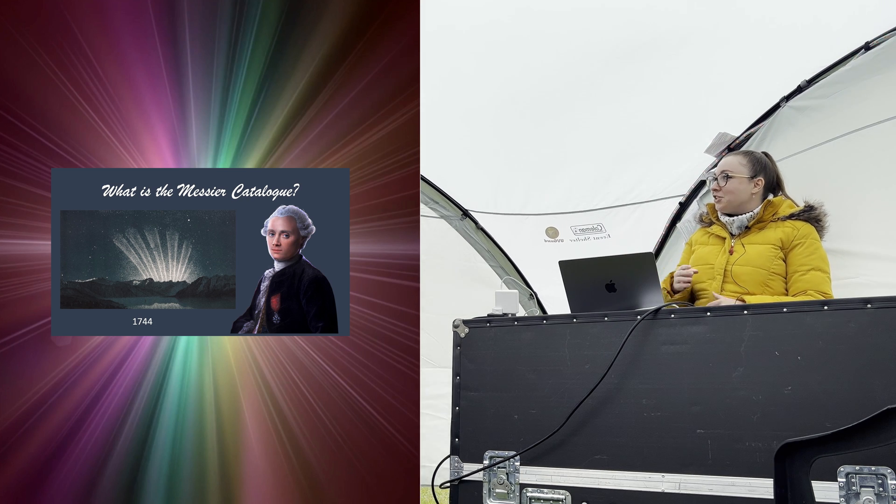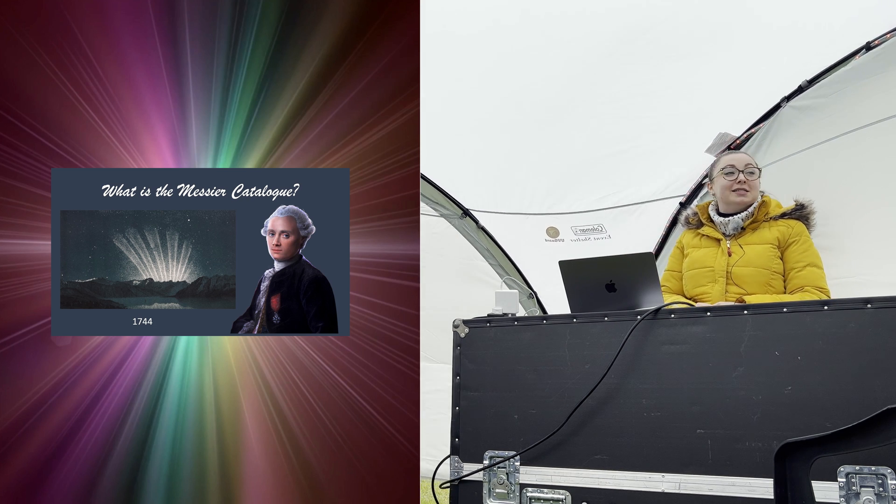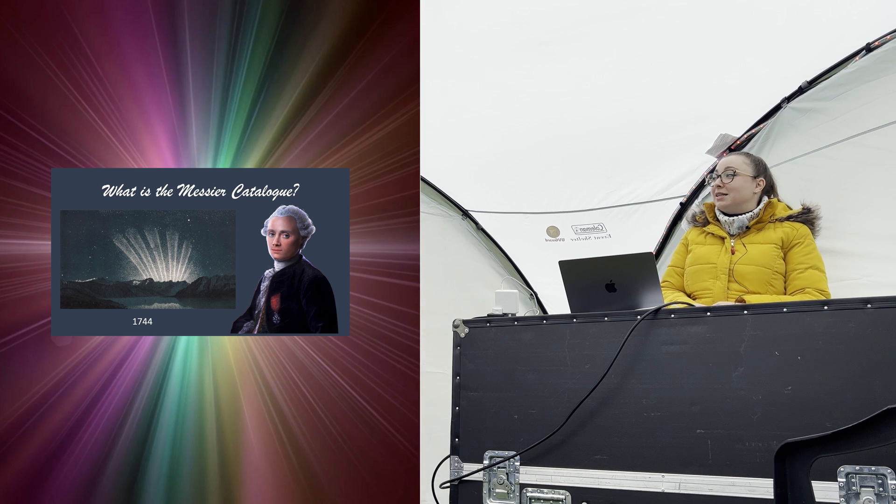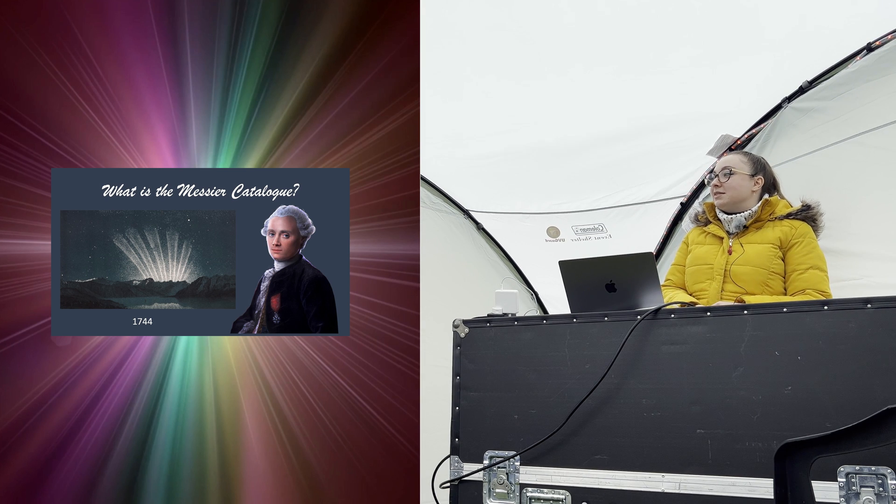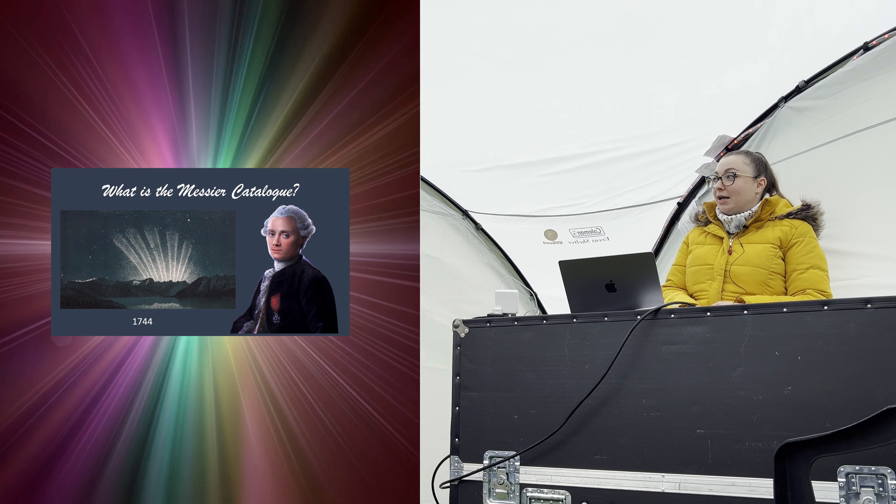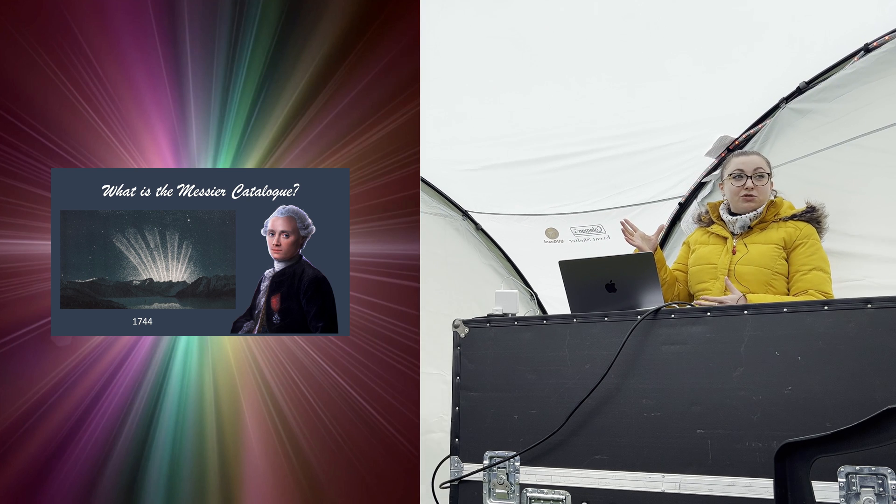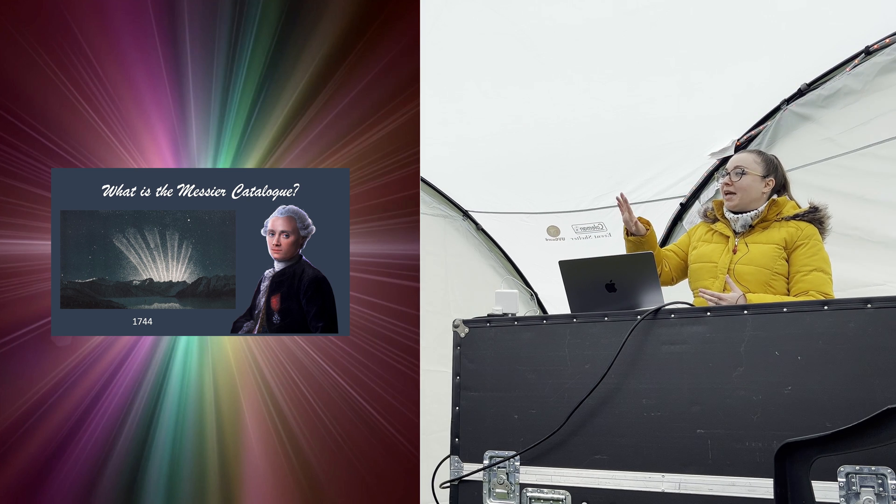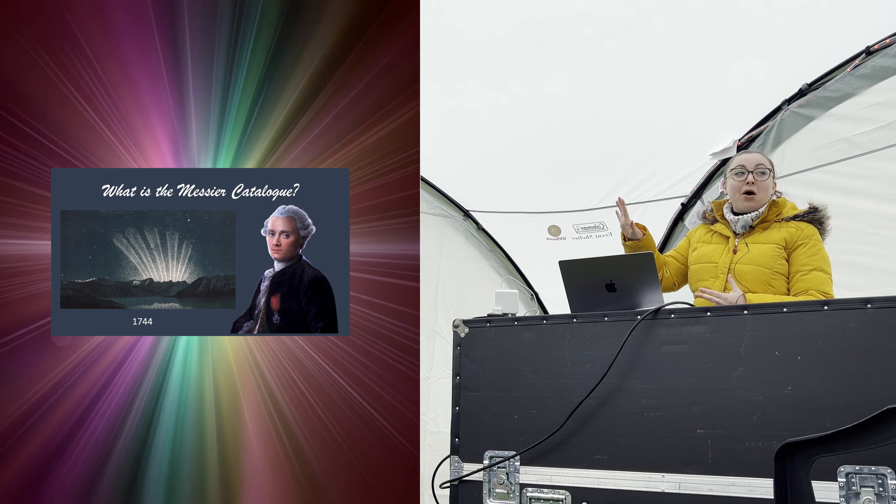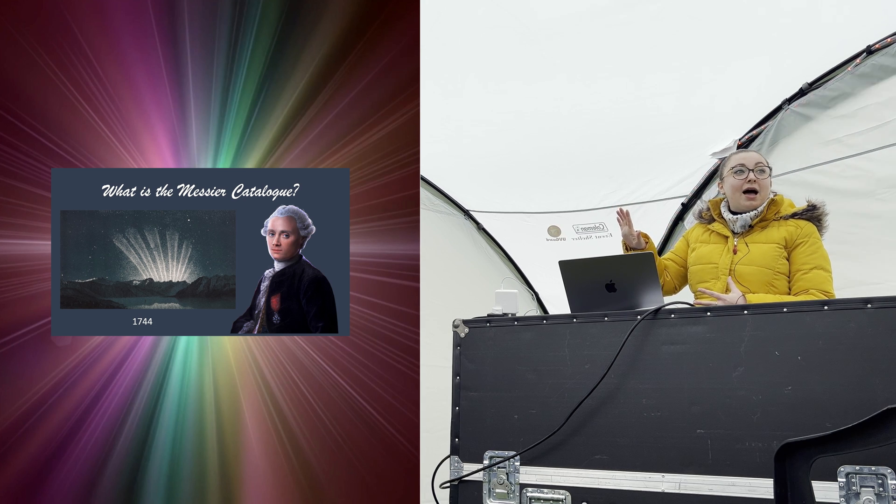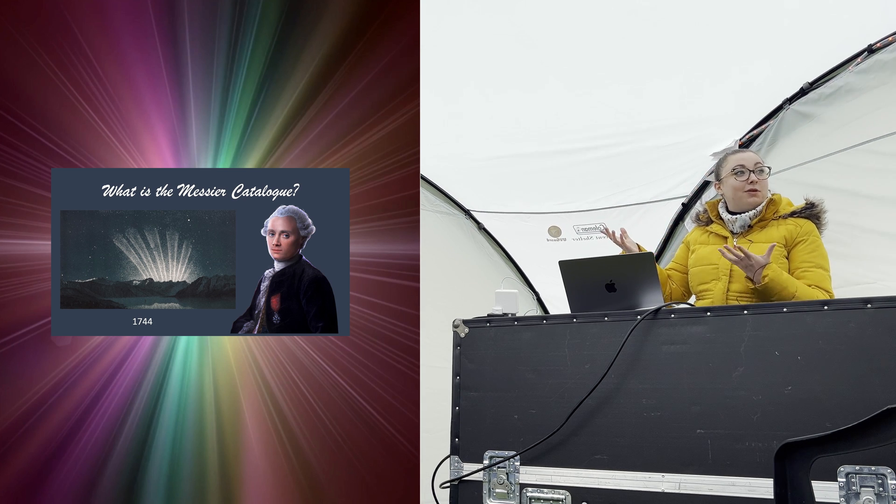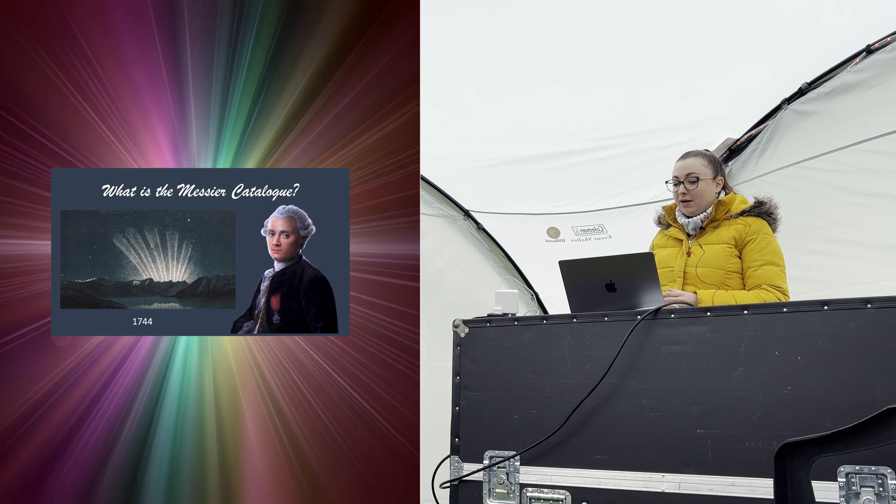Charles Messier was a comet hunter. He was inspired as a teenager by the Great Comet of 1744, and supposedly this comet was extraordinary. It had this enormous striated tail which spans about a quarter of the night sky, and when he saw this, this is what inspired him to go on and become a comet hunter.